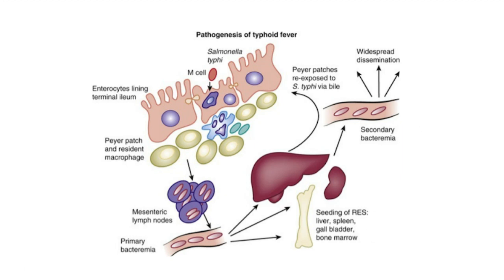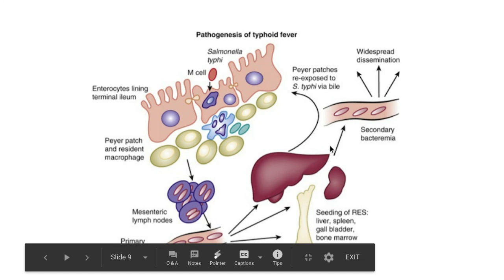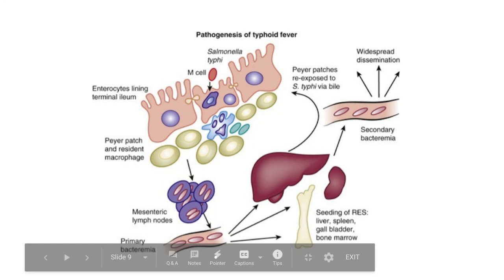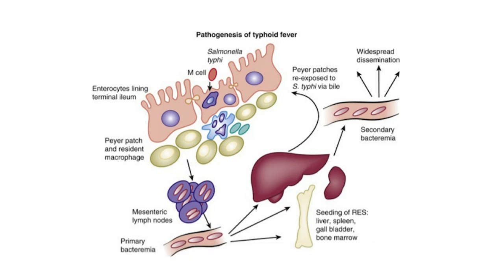The first time organisms enter the bloodstream is called primary bacteremia, and this primary bacteremia does not give rise to symptoms. The organisms are then disseminated to the reticuloendothelial system — liver, spleen, and bone marrow — where multiplication takes place inside macrophages. After multiplication, bacteria are again released into the bloodstream, causing secondary bacteremia, which does cause symptoms. Here the incubation period ends and symptoms begin.